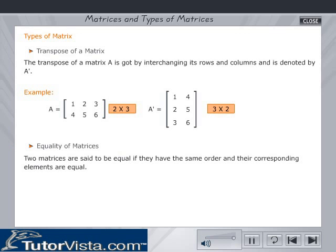Equality of matrices: Two matrices are said to be equal if they have the same order and their corresponding elements are equal.